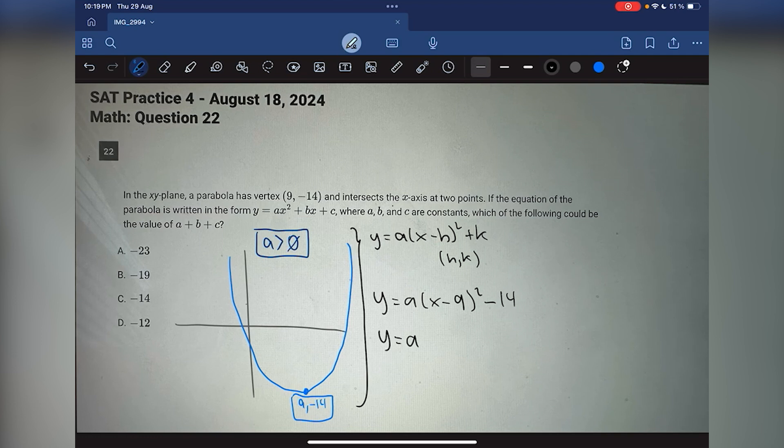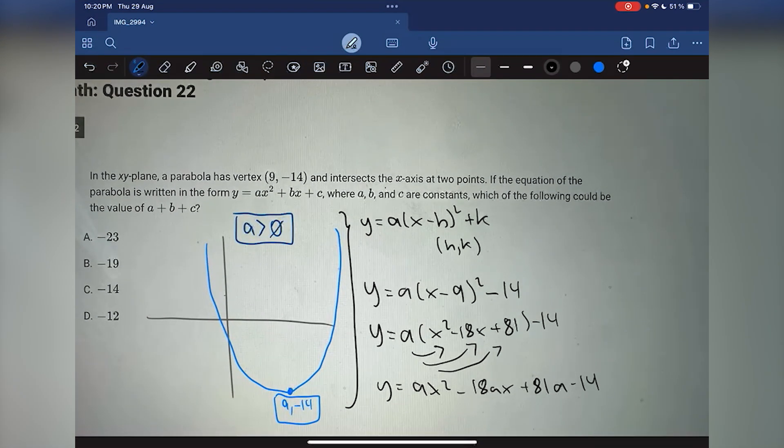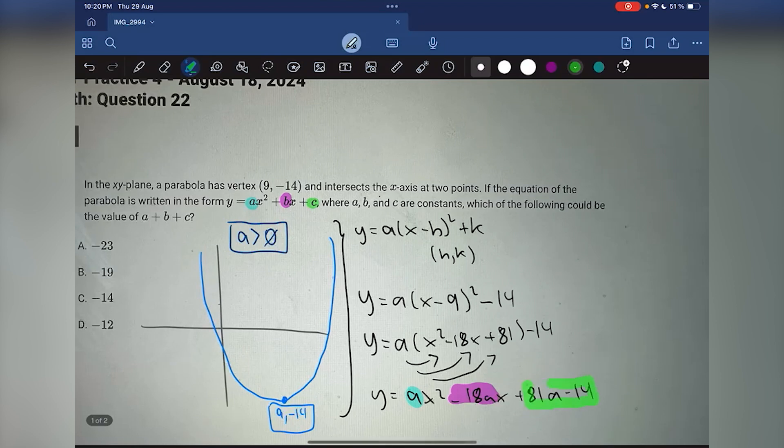So if we expand that, it will look y equals ax squared minus 18x plus 81 minus 14. Let's just multiply the a to everything. So now let's color code because now it is in the same form. So if we look at a here, it is a, but if we look at b, it is negative 18a. And if we look at c, c is 81a minus 14.